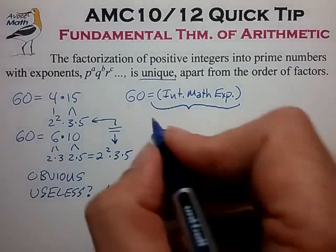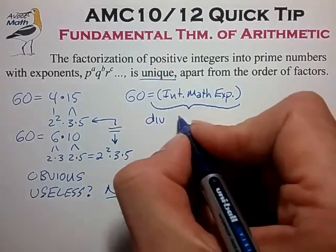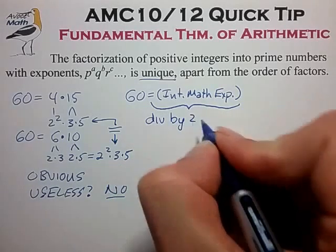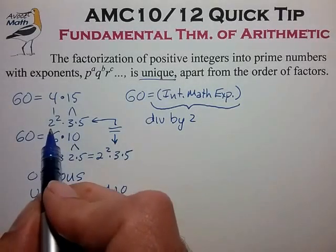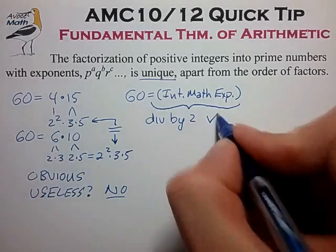So what can we learn about this integer math expression just using the fundamental theorem of arithmetic? So here's some questions we could ask. Is the integer math expression divisible by 2? Well 60 has a factor of 2, so we know that in fact it is divisible by 2.